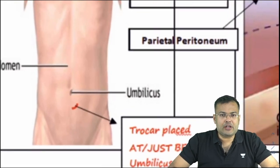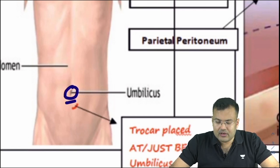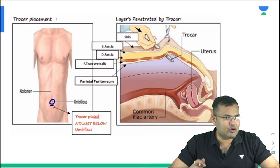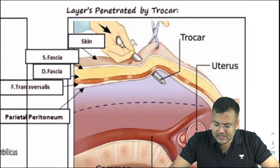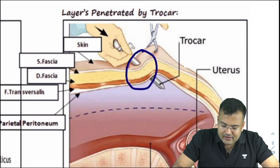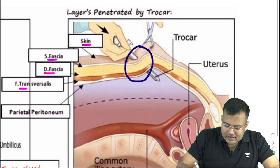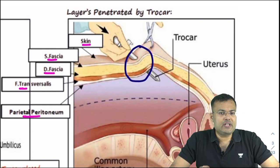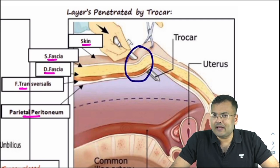The site of insertion of the trocar is at or just below the umbilicus. When inserting the trocar, the layers penetrated are: skin, superficial fascia, deep fascia, fascia transversalis, and parietal peritoneum.